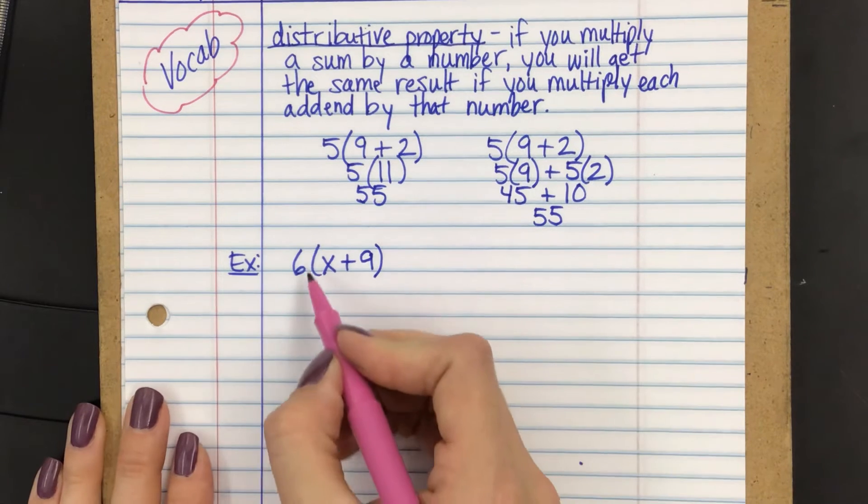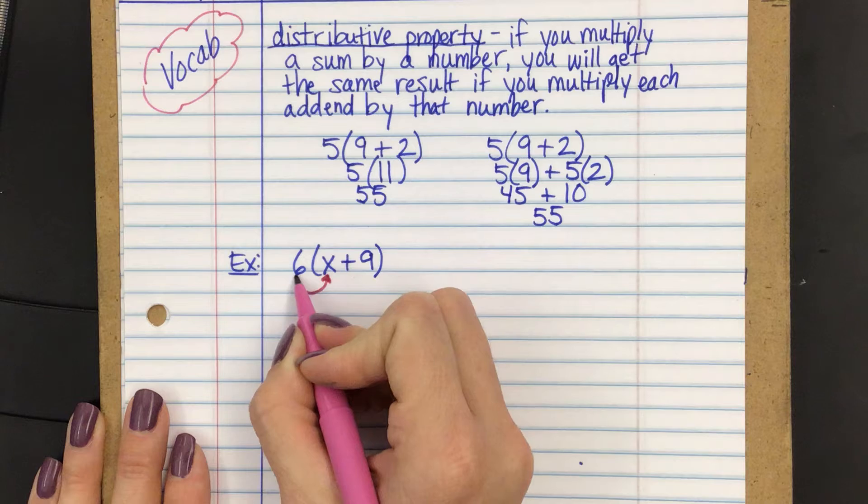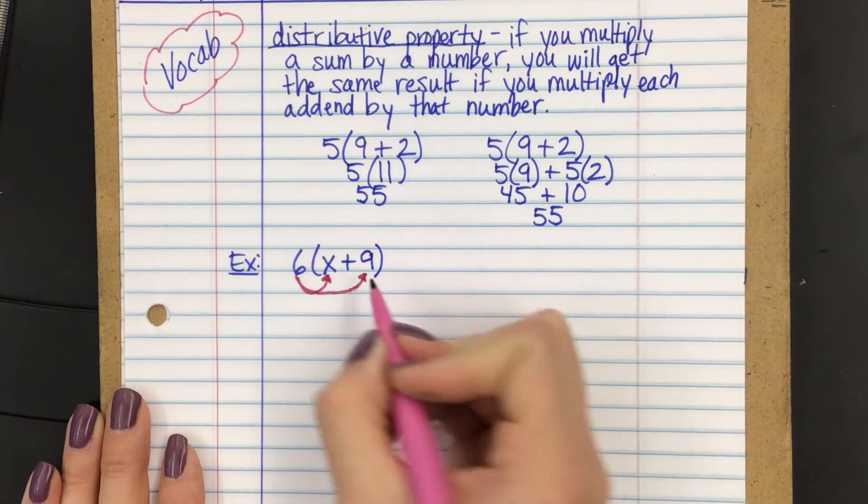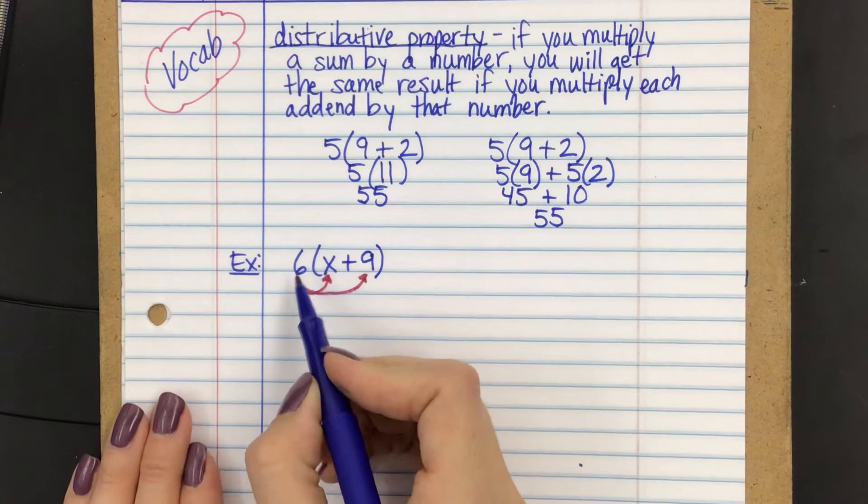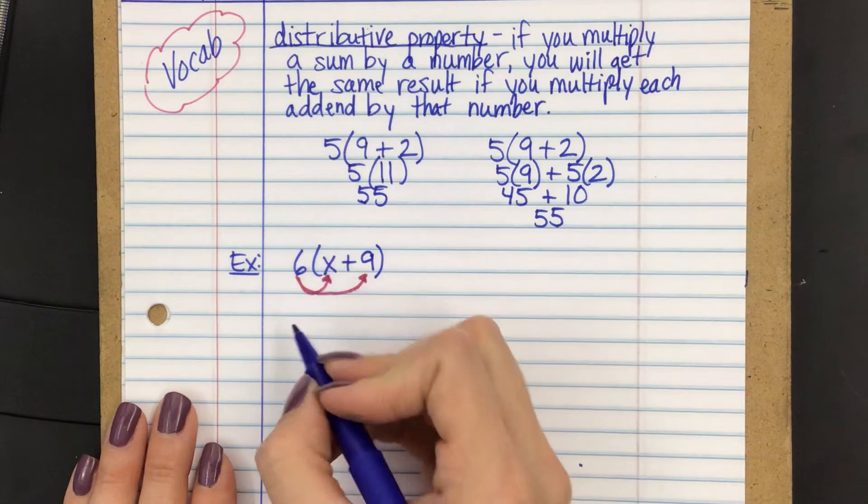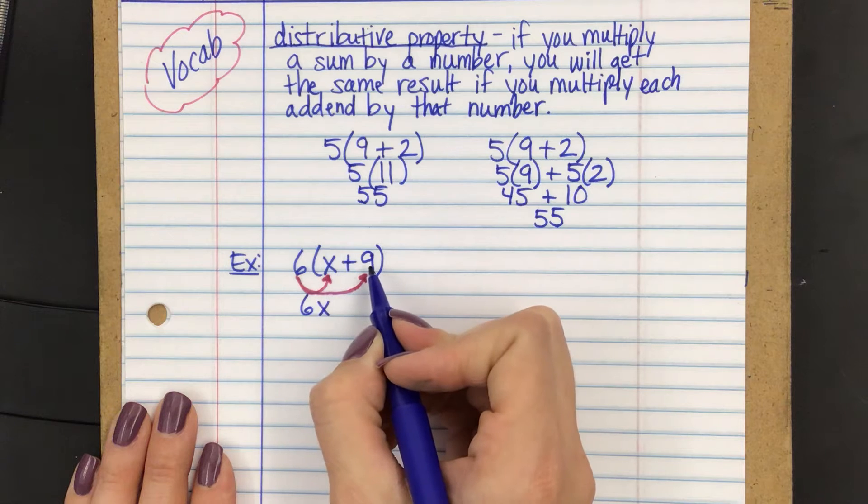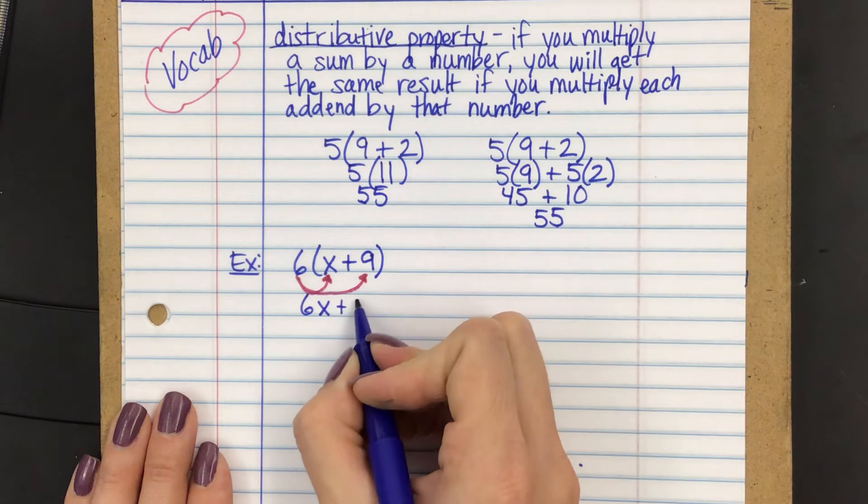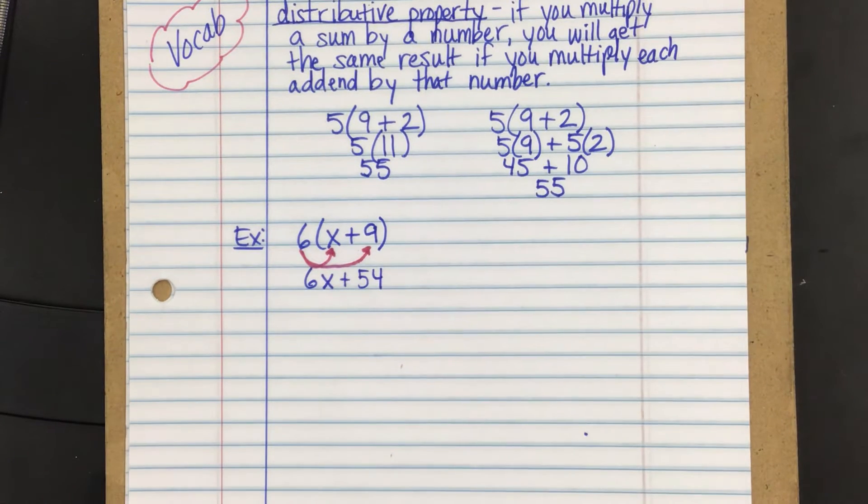So what we're going to do is we're going to take that 6 and we're basically going to pass it out. We're going to say a 6 for you, a 6 for you, and then we're going to multiply them. So 6 times x, we don't know what x is, so we're just going to have to leave it as 6x. And then 6 times 9 is 54. So we can say plus 54. Now, we can't go any further than that. We don't know what x is. We don't have any like terms, so we just leave it like that.